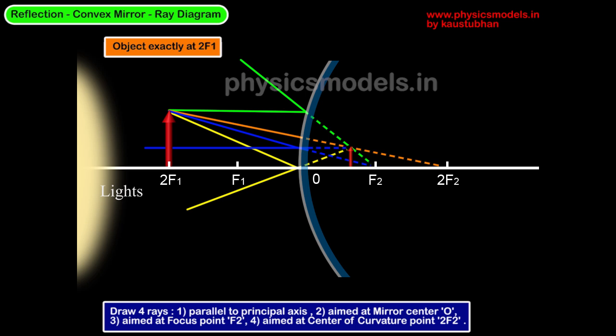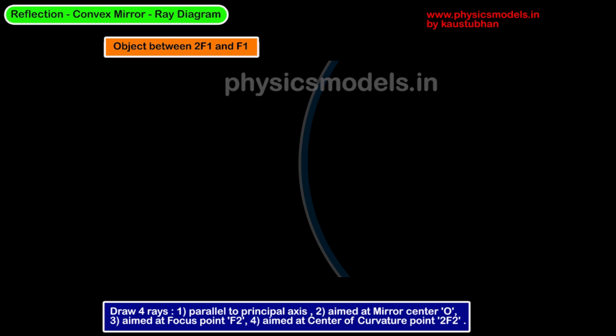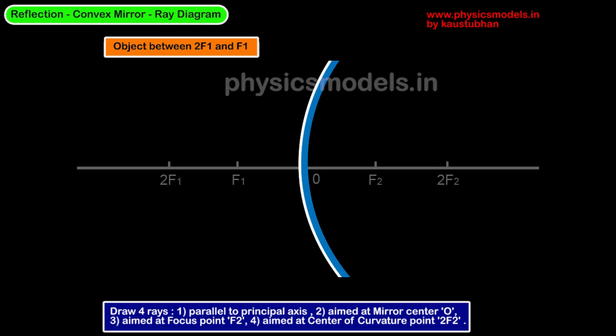Extend those four rays backwards as dotted lines and you can see the image formation. It's a virtual image, it's erect and it's diminished in size. We have covered the three parameters for the image. Next, we will bring the object even closer to the mirror. We'll follow the same principle, not doing anything new. Once you're used to this, you can do it very easily.